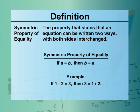Symmetric property of equality: the property that states that an equation can be written two ways, with both sides interchanged. Symmetric property of equality — if A equals B, then B equals A.